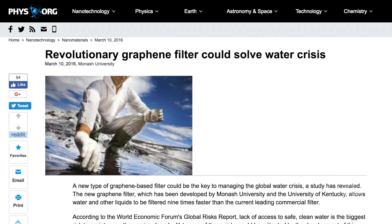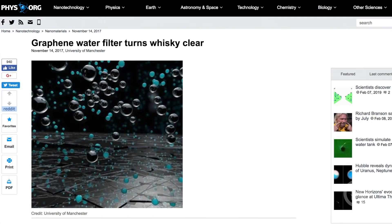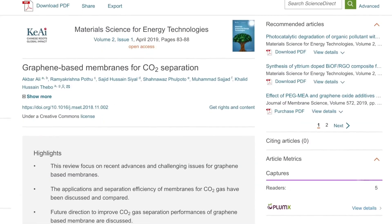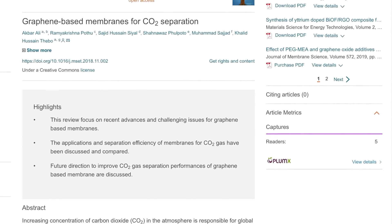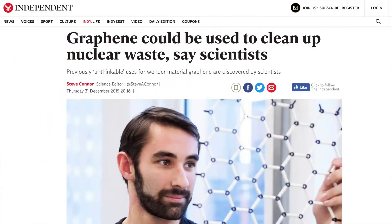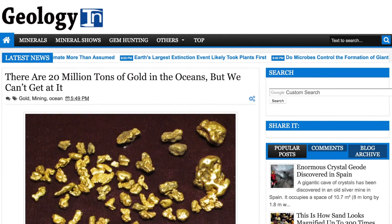Graphene filters won't only filter water, though. In fact, they would allow for the storage, separation, and purification of any small gas, liquid, or pharmaceutical you can think of. A good nanofilter system holds the promise of creating carbon capture plants that can deconstruct CO2 from the atmosphere, catch radioactive waste particles, and even extract the 20 million tons of gold particles floating around our oceans.